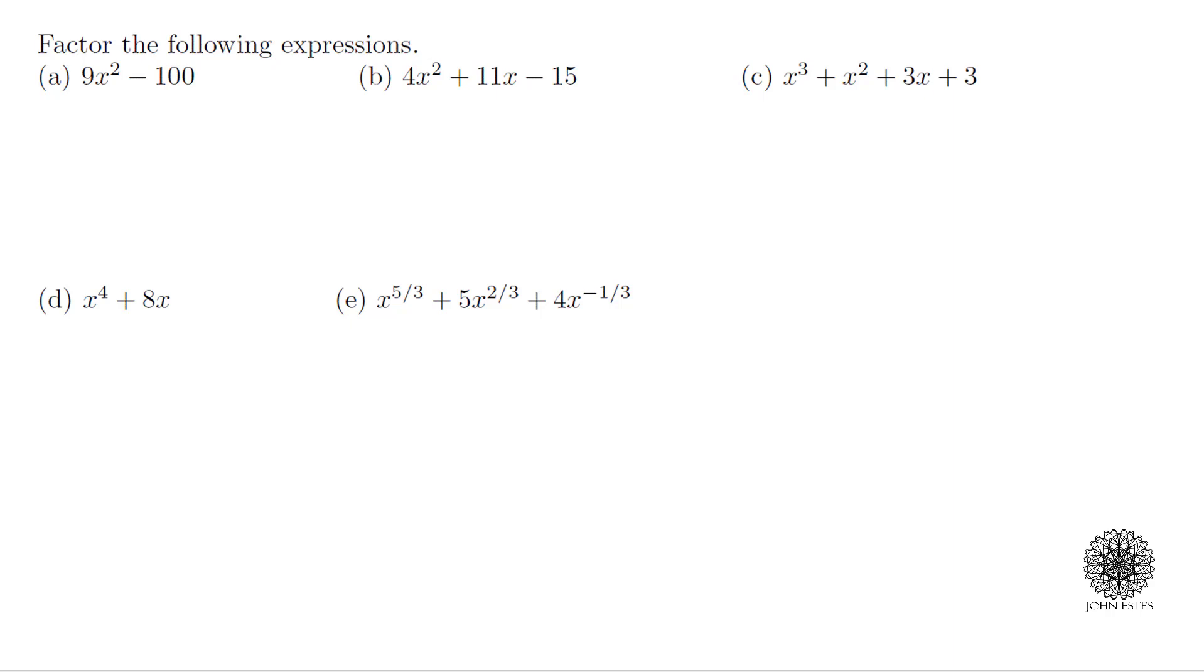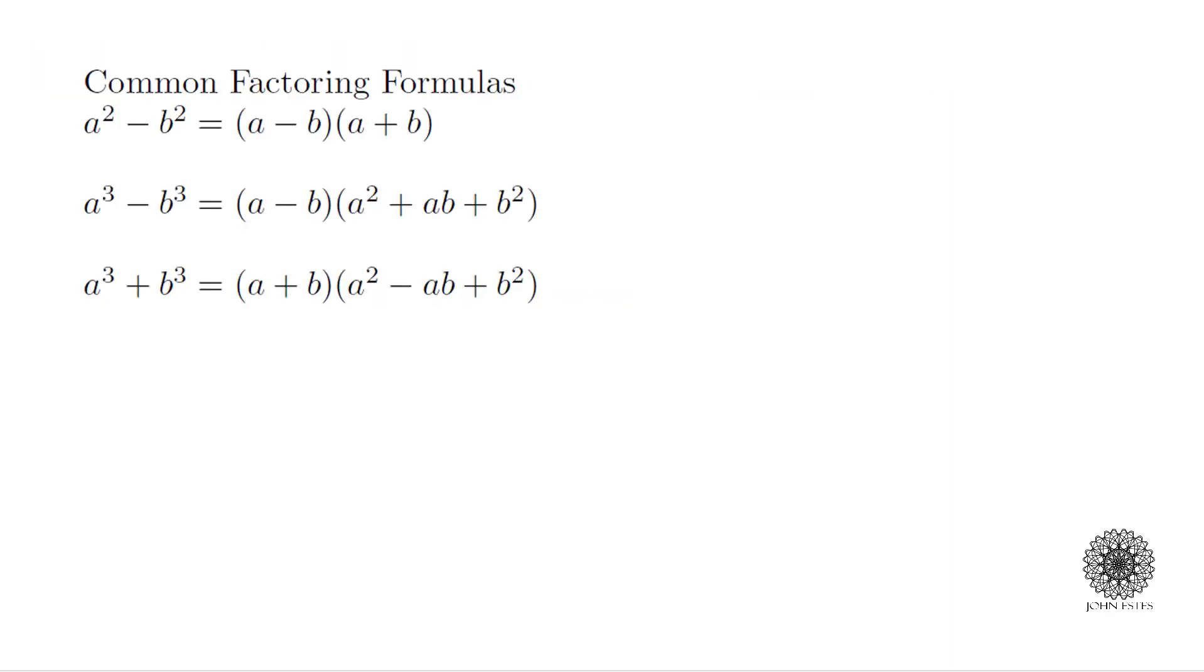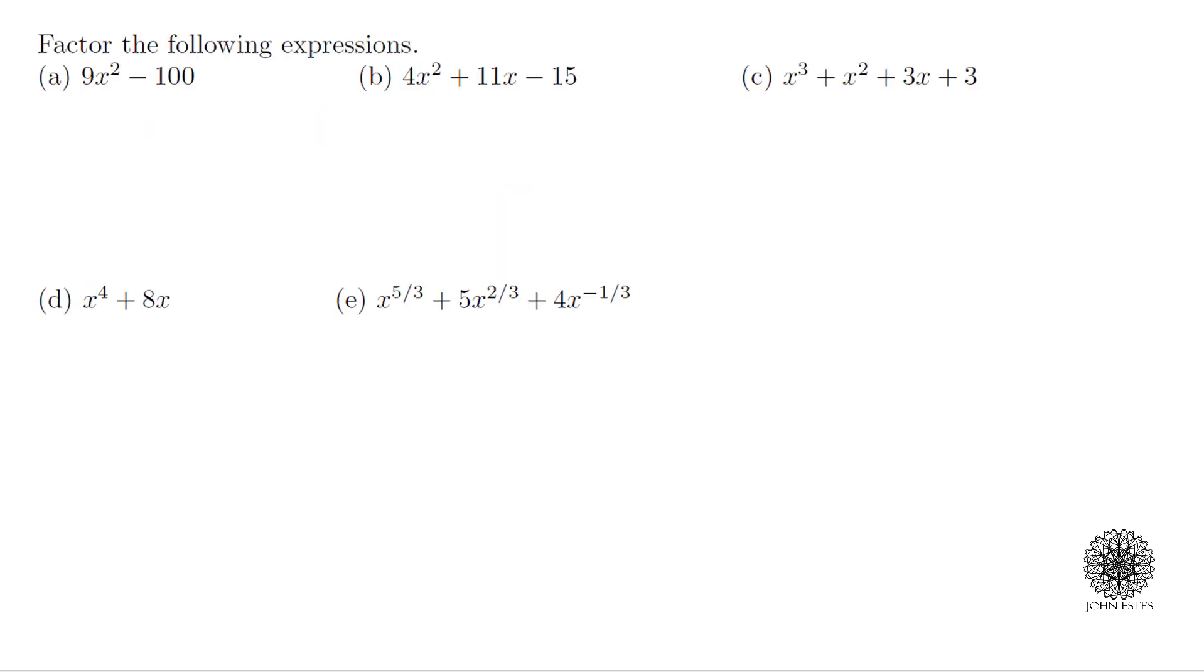For this first one we're going to use some of these common factoring formulas, in particular a² - b² = (a - b)(a + b). In this first example I have 9x² - 100. I recognize that's the same thing as saying (3x)² - 10².